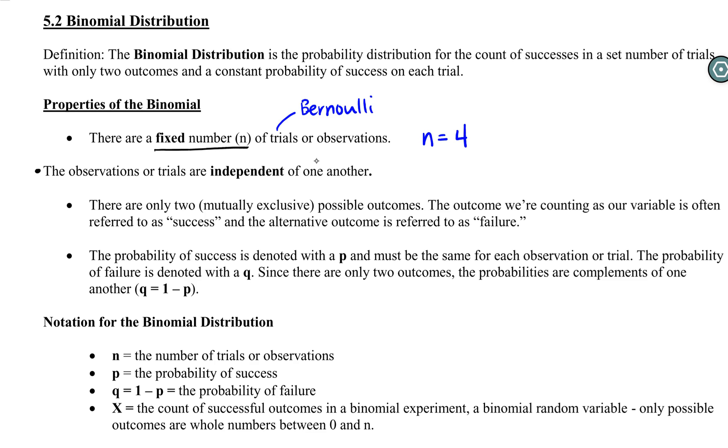We actually call these technically Bernoulli trials. They're called Bernoulli trials. Bernoulli trials have two outcomes, either a success or a failure. So either this or not this. They are mutually exclusive and they are complements of each other. So those are our two pieces. Every trial there's two things that can happen, success or failure.